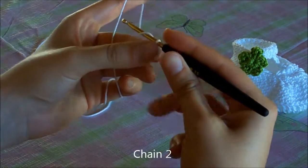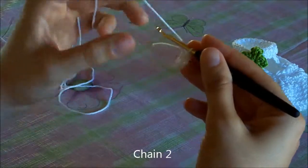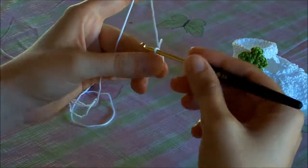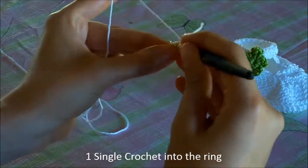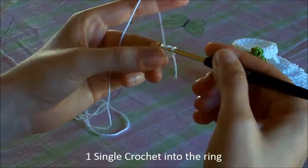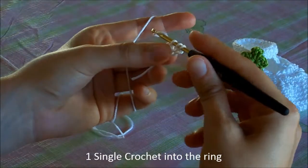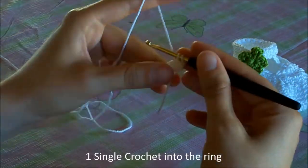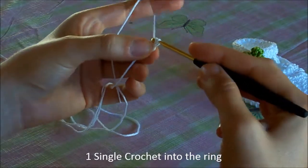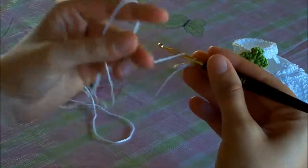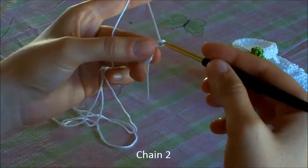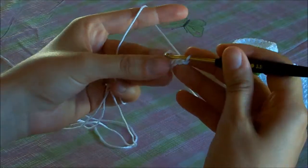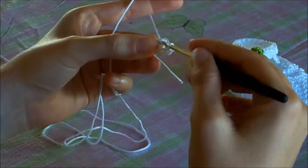Now we are going to chain 2 and make a single crochet into the center of the ring. Once again chain 2. We finish the first sheet with a slip stitch into the ring.